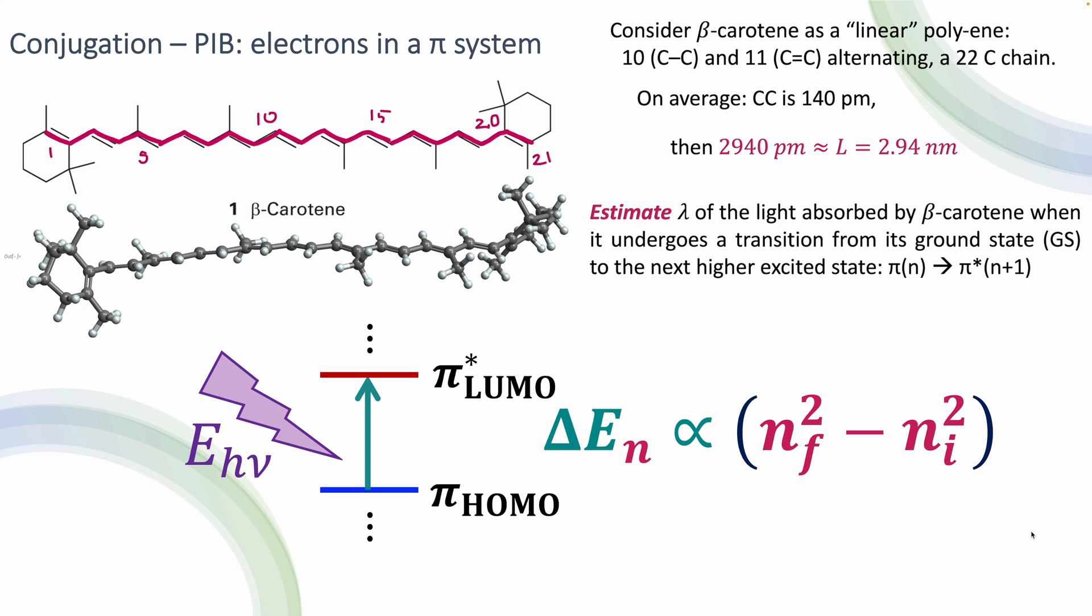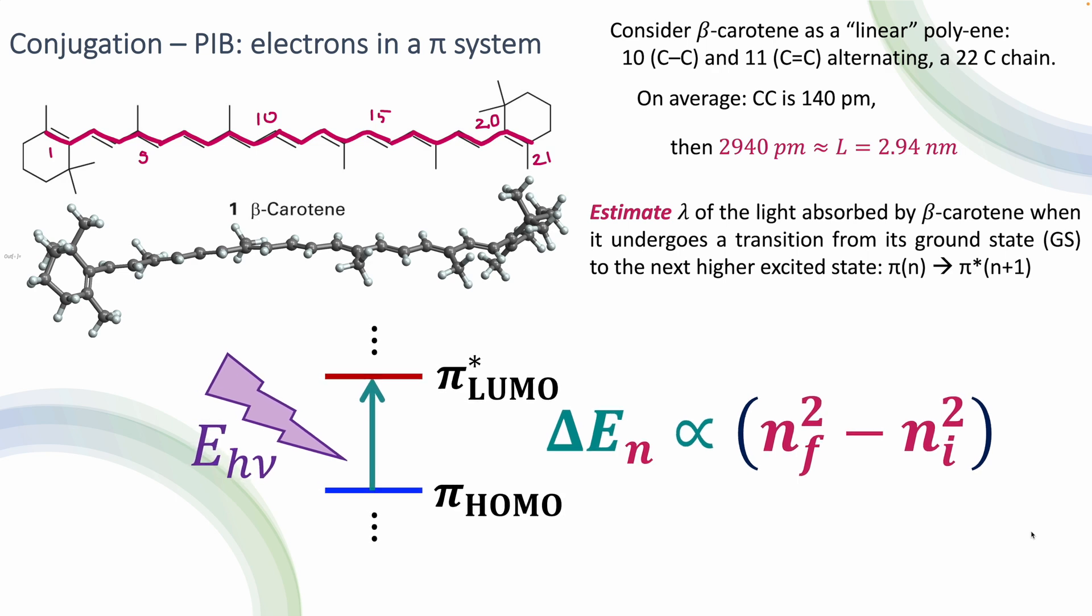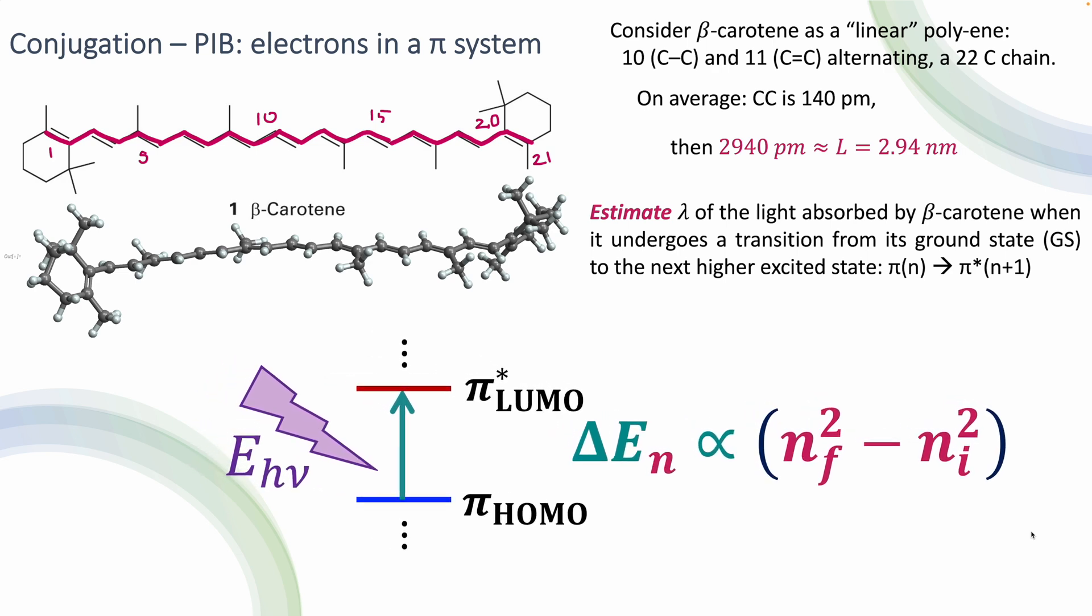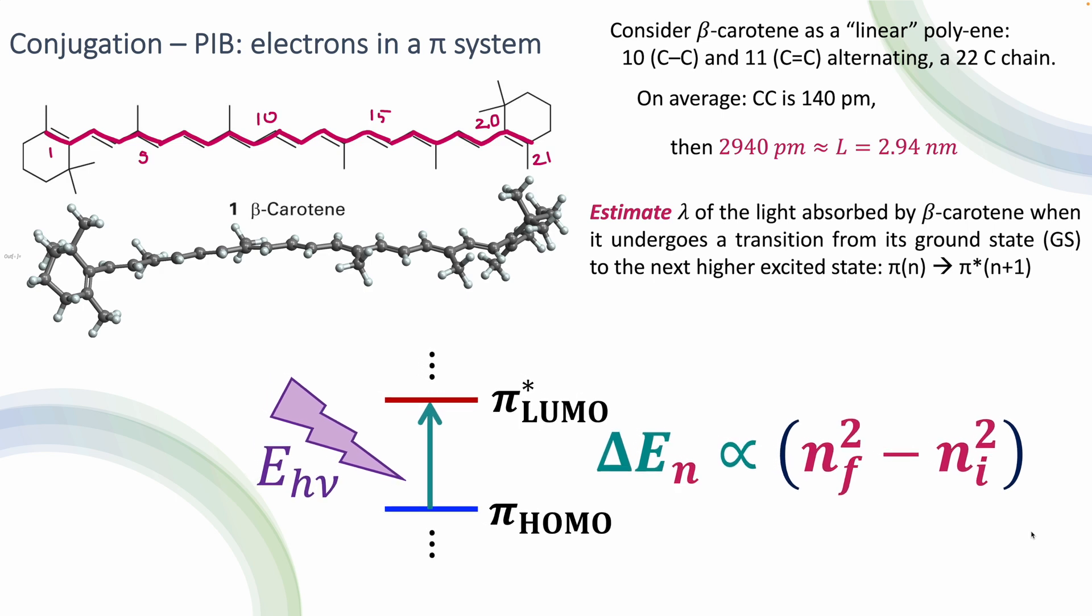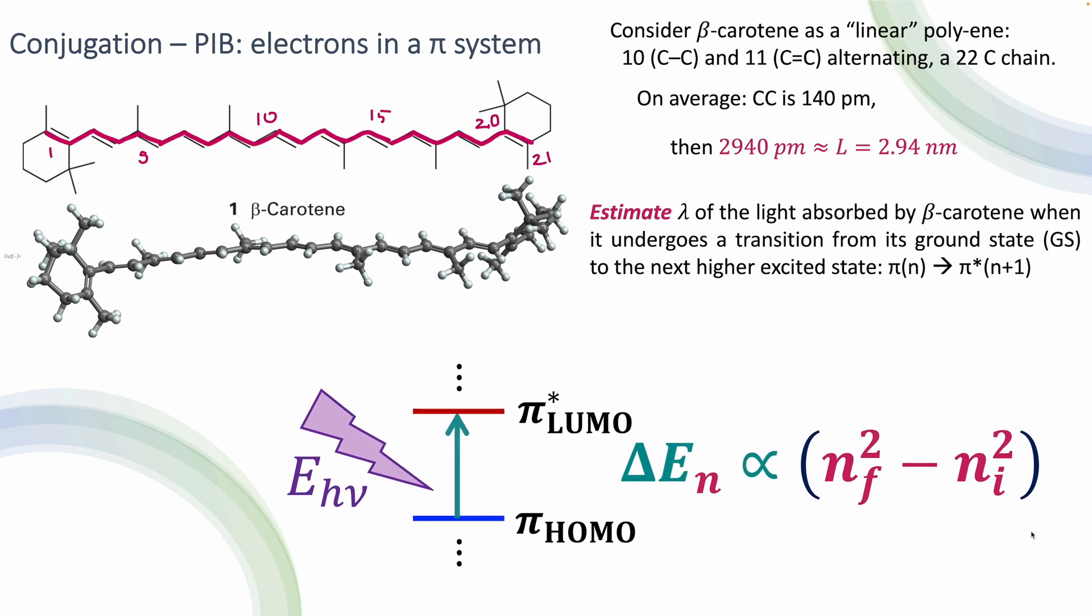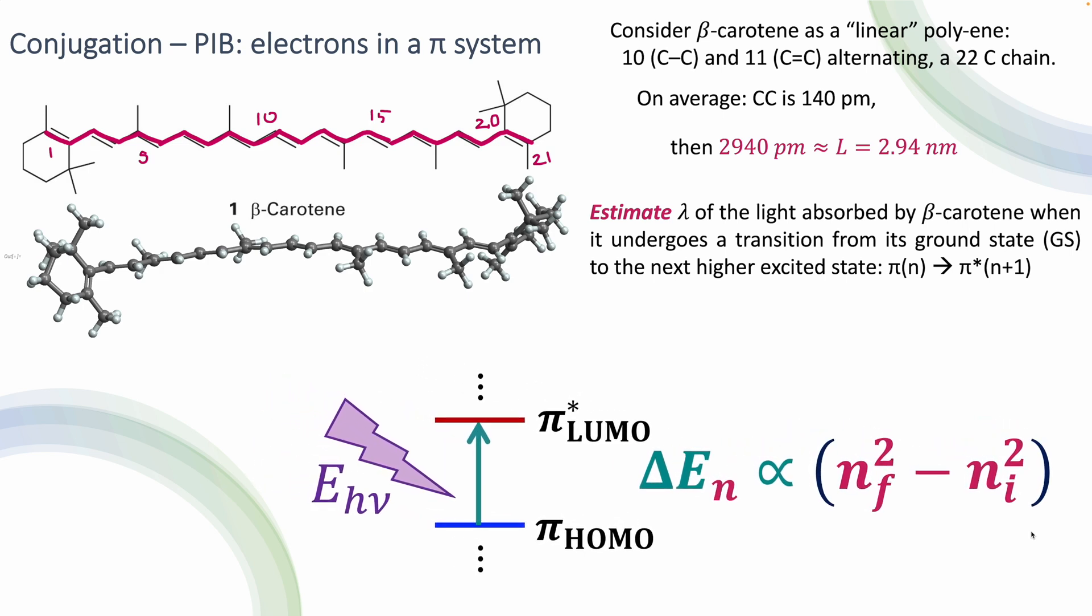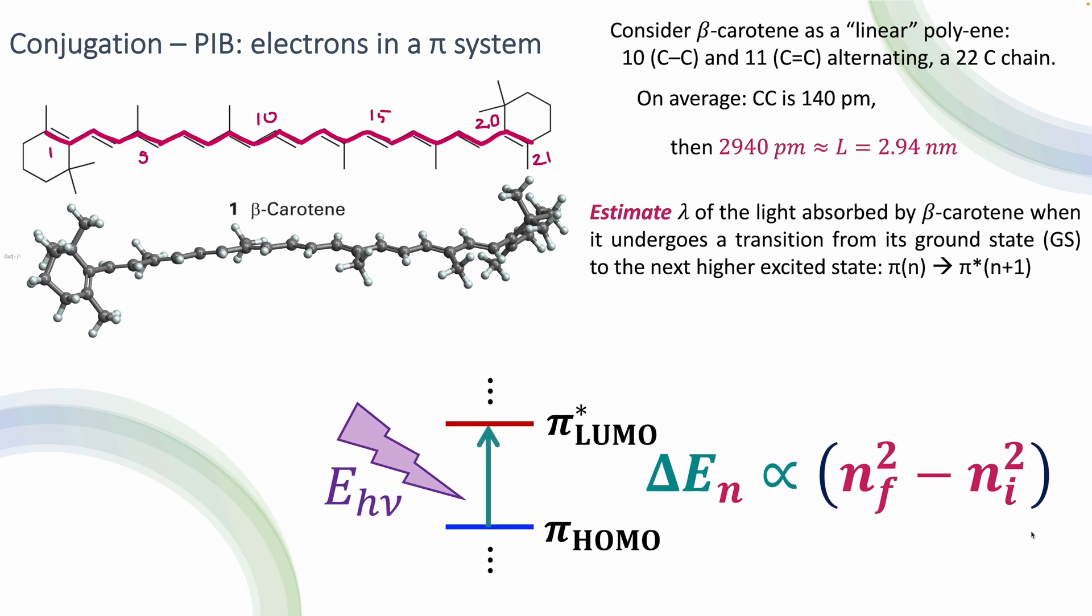And again, if we're just thinking in the simplistic model of having just absorption between electrons in the pi bonds, in my pi system, we will be considering HOMO and LUMO, where HOMO is going to be equal to the energy level of my particle in the box, and that's going to be N, the excitation is going to go to energy level N plus 1.